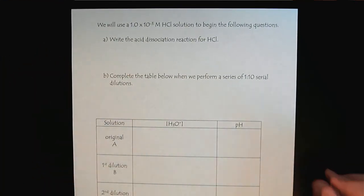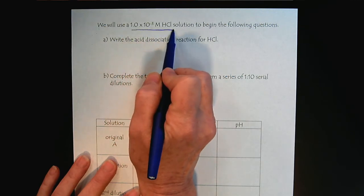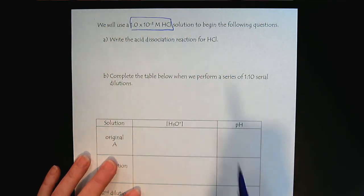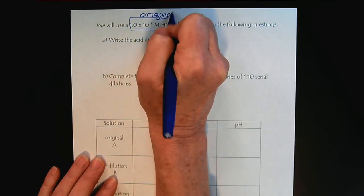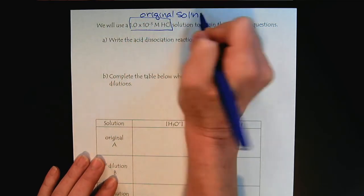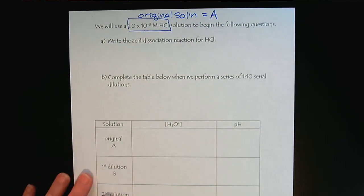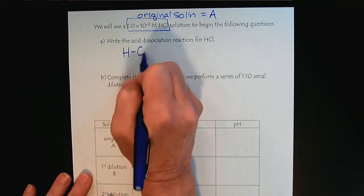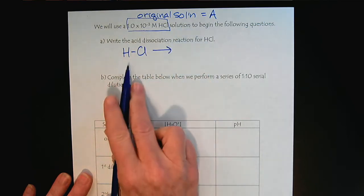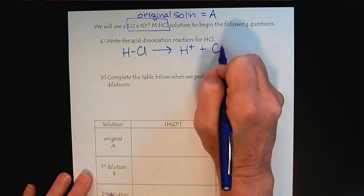Okay. So this time, we will start with a stock solution that has an original concentration of 10 to the minus 3 molar. So we will call this our original solution A. And so let's make sure everyone understands. We did this on the previous page, but let's make sure.